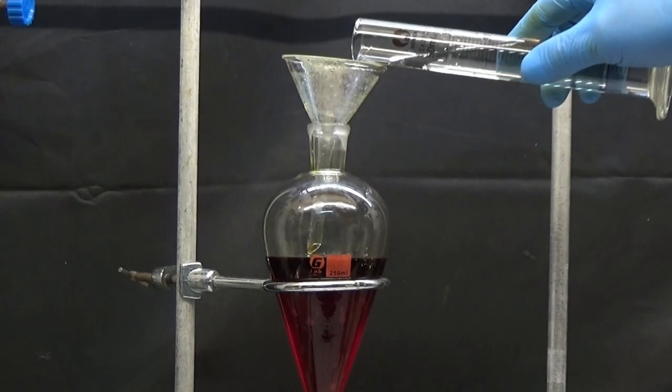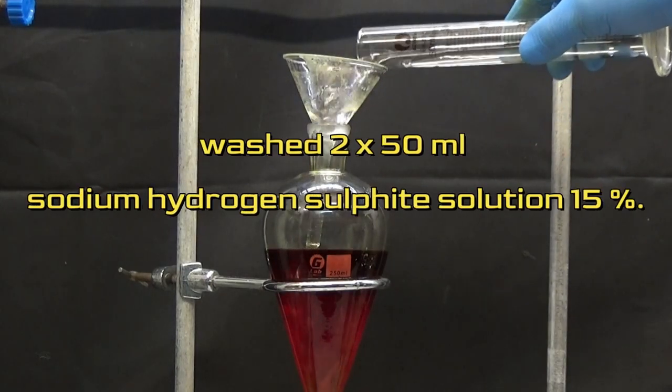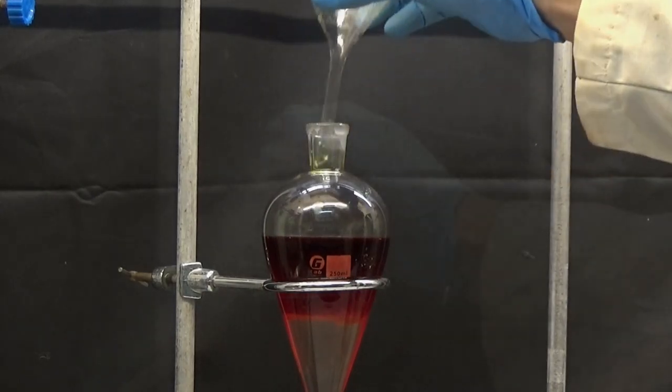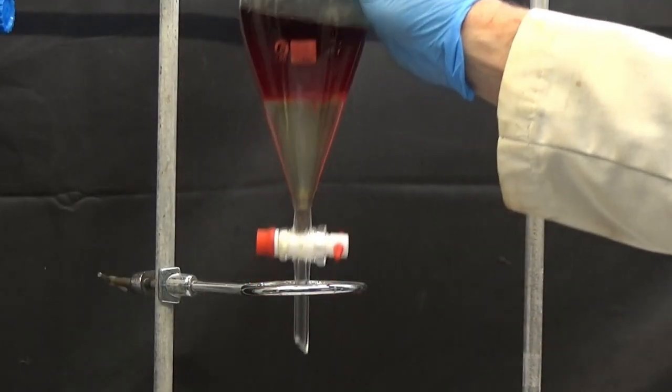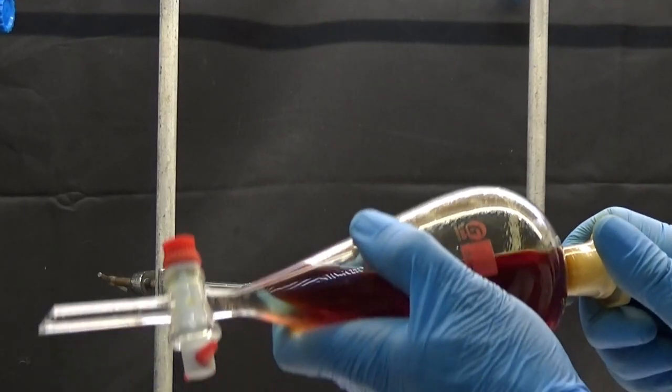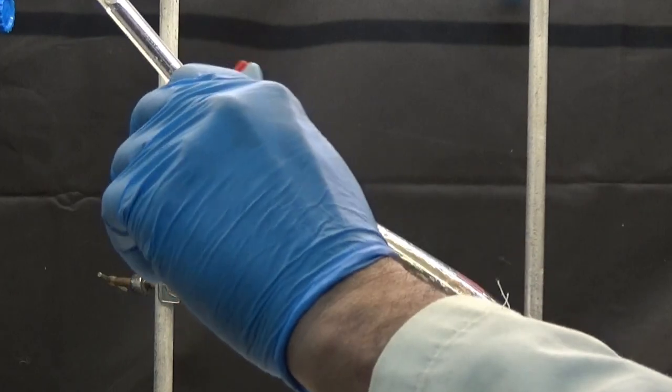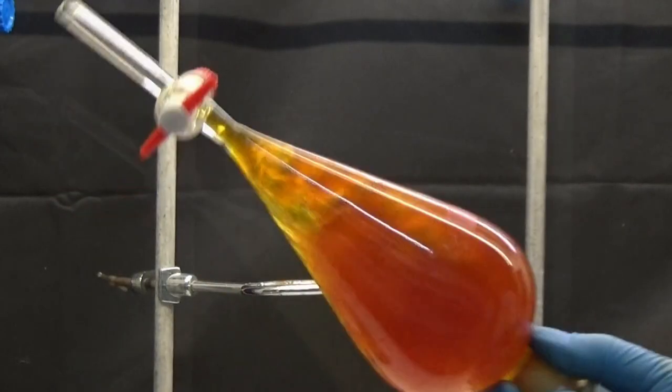The organic phase is washed twice with 50 milliliters sodium hydrogen sulfite solution at 15 percent. In this wash we observe that the red color of the iodine disappears.